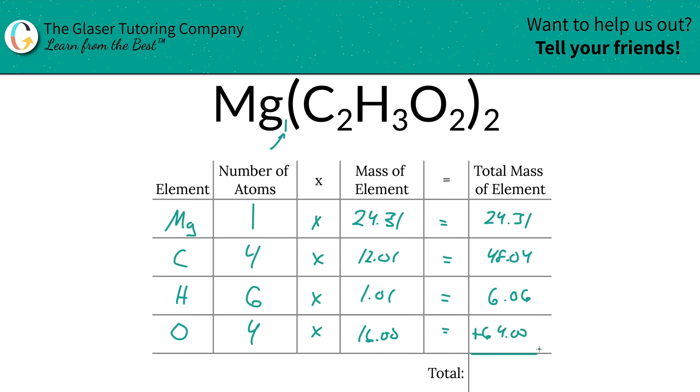Then to find the total mass of the entire compound, literally just add this column up. It's as easy as that. So the total here is going to be 142.41. That was the total mass. That's what we had to find first before we did the percents.